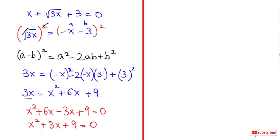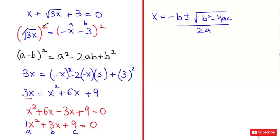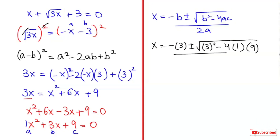So we get a quadratic equation. I am going to solve this by using the quadratic formula. Here a equals 1, b equals 3, and c equals 9. The formula is x equals minus b plus or minus root of b squared minus 4ac over 2a. Now plugging in the values: x equals minus 3 plus or minus root of 3 squared minus 4 times 1 times 9 over 2.